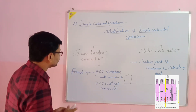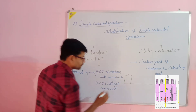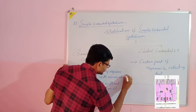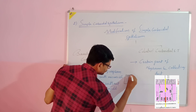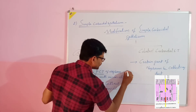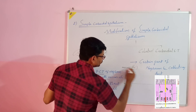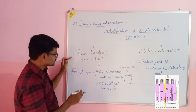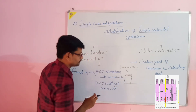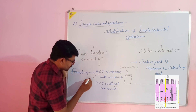Brush border cuboidal epithelium is mostly located in the PCT — the proximal convoluted tubule of the nephron. The apical surface of the cuboidal cells in the PCT area gets modified into microvilli. This type of modification is called brush border cuboidal epithelium, because the microvilli look like a brush.